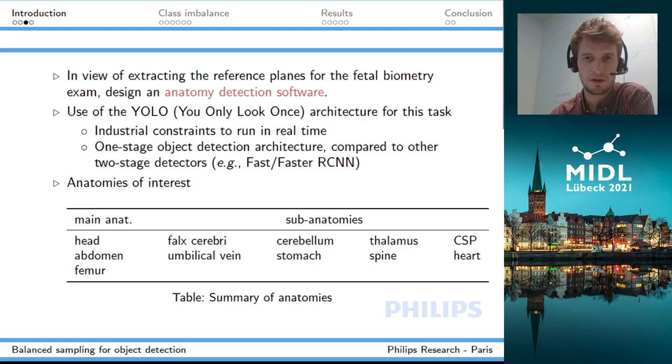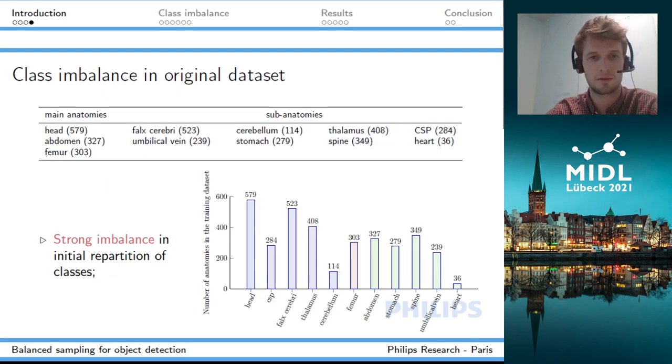YOLO is different than other detectors like Faster R-CNN because it's a one-stage detector, whereas Faster R-CNN is a two-stage detector, which means we don't have access to the same family of methods to correct an imbalance in the dataset. Here are the anatomies we want to identify: three main anatomies - the head, abdomen, and femur - and several sub-anatomies. For instance, within the abdomen we may want to identify the umbilical vein, stomach, spine, or heart.